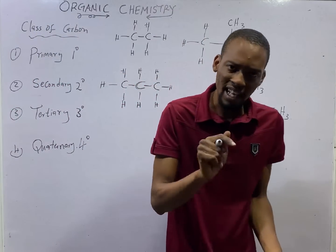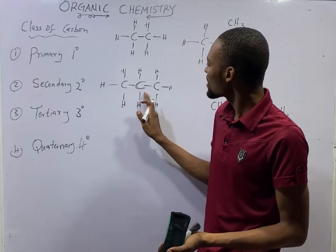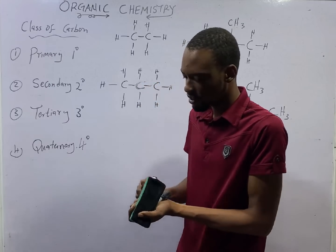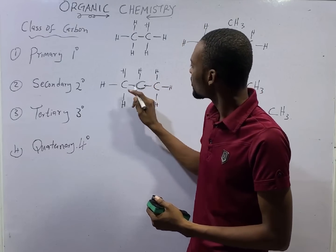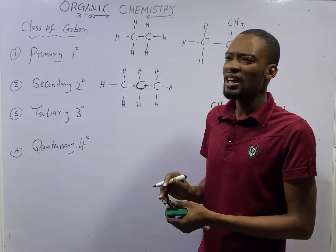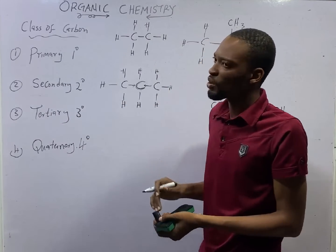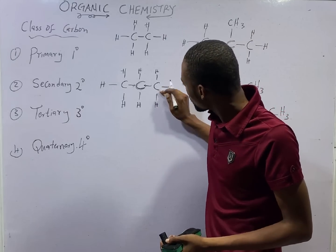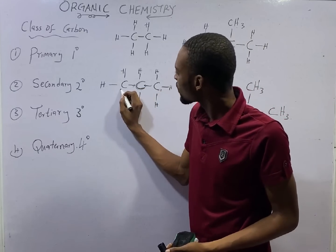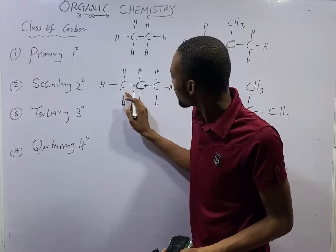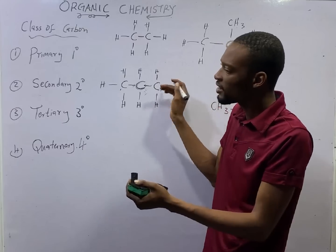Secondary carbon is simply a carbon that has two other carbons attached to it. If you look at this compound, this carbon is directly attached to this one, and this other carbon is also directly attached to it. A carbon atom that has two other carbon atoms directly attached to it is referred to as secondary carbon. This carbon over here has just one attached directly to it — that's primary. But this one has two other carbons directly linked to it, making it secondary.